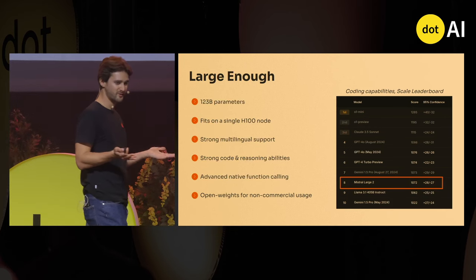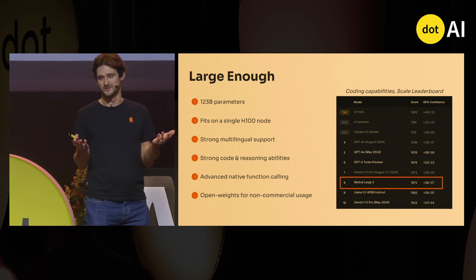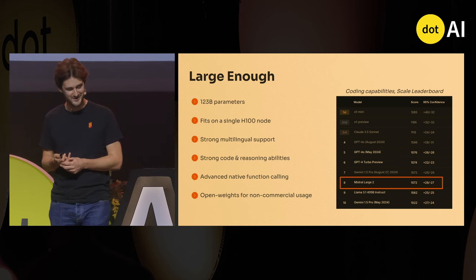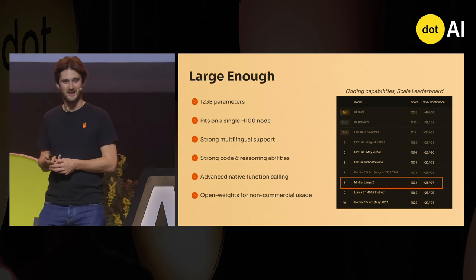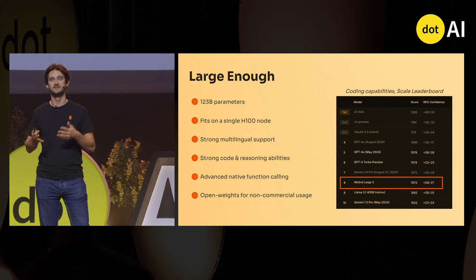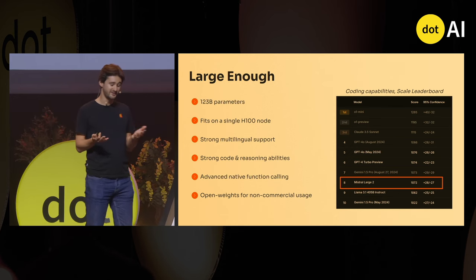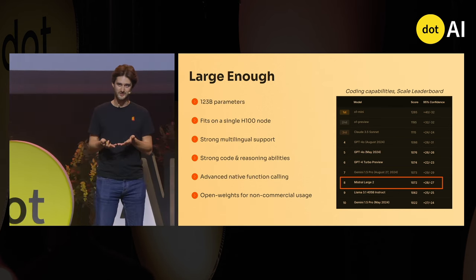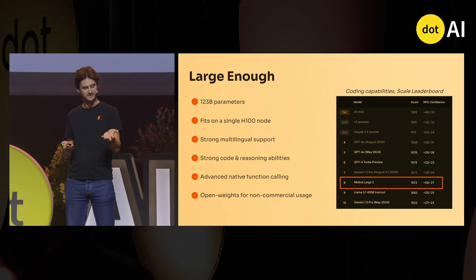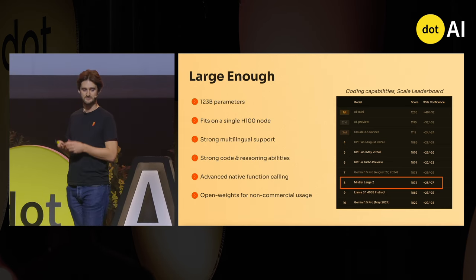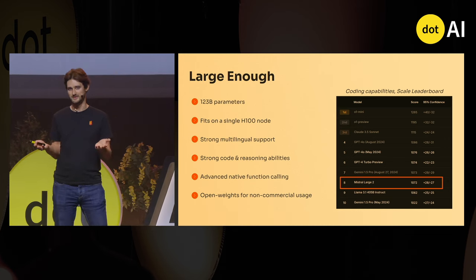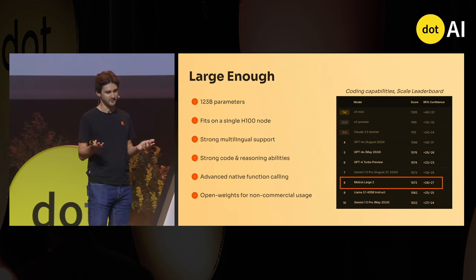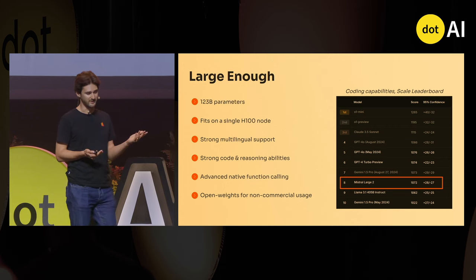The most prominent member of the Mistral family is Mistral Large — 123 billion parameters. The key takeaway for this model is that it's large enough. In particular, it's three times smaller than LLaMA 3, and on this particular leaderboard, Scale 1 on coding capabilities, as of yesterday, it's better than LLaMA.